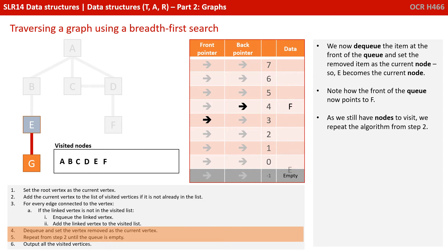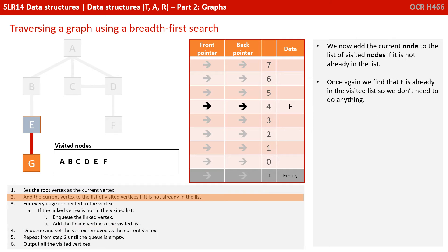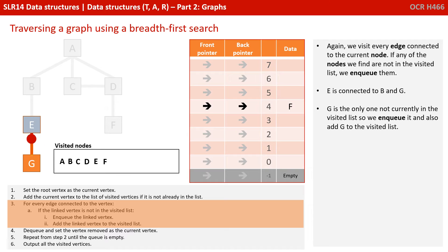We now dequeue the item at the front of the queue and set the removed item as the current node, so E is now the current node, and the front of the queue is now pointing to F. We repeat the algorithm from step 2. E is already in the list, so there's nothing to do there. E is connected to B and G, but G is the only one not currently in the visited list, so we enqueue it and also add G to the visited list.